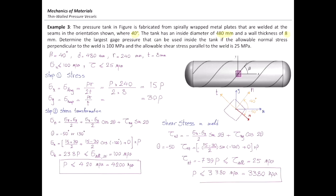I have two criteria: based on the maximum normal stress, the maximum allowable pressure is 4200 kilopascal; based on the shear stress, it is 3380 kilopascal. The final allowable pressure is definitively the lowest one. So 3380 kilopascal — or 3.38 megapascal — is the final answer to this problem.